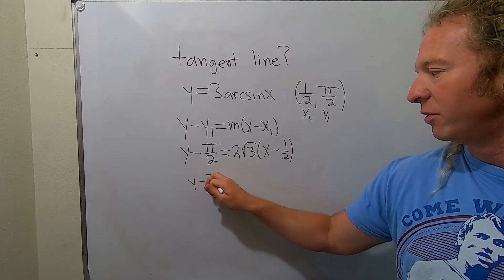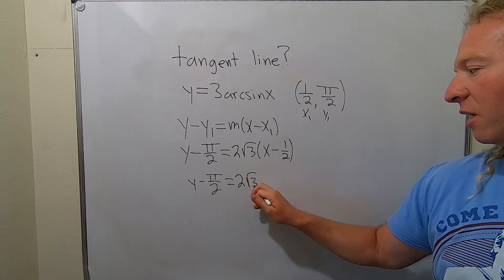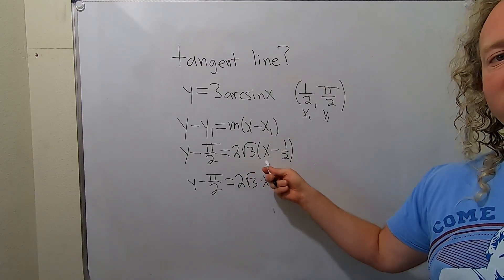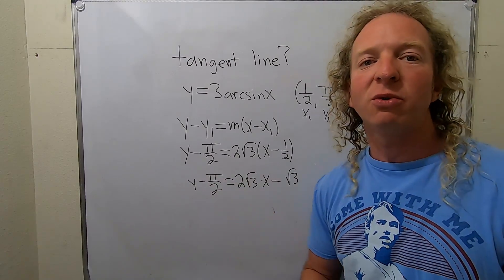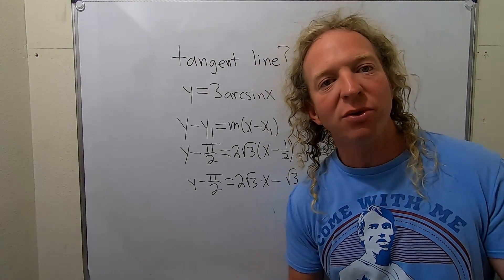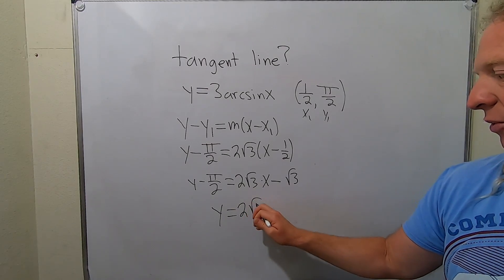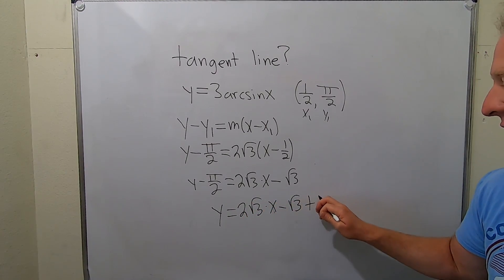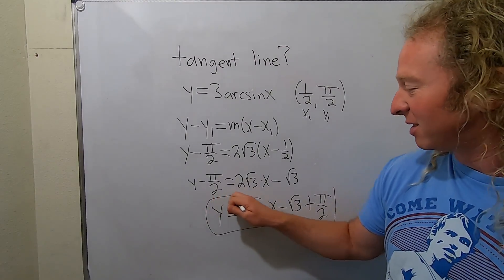So y minus π over 2 is equal to 2 square root of 3 times x minus, when you multiply these, the 2s cancel, so you just get minus square root of 3. Last thing to do would be to add π over 2 to both sides of this equation. So y equals 2 square root of 3 times x minus square root of 3 plus π over 2. What a ridiculous answer. Only in calculus, right? This is the only time you see stuff like this.